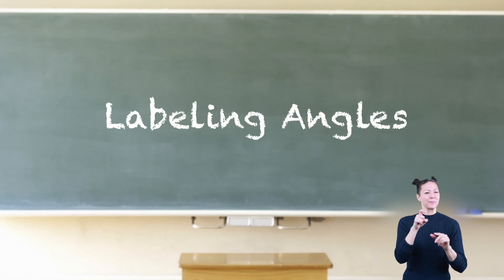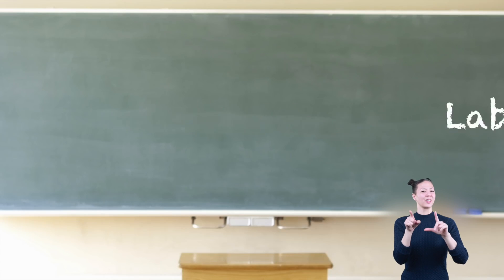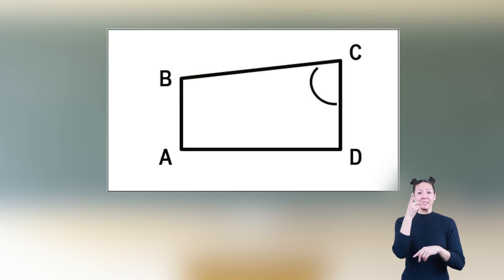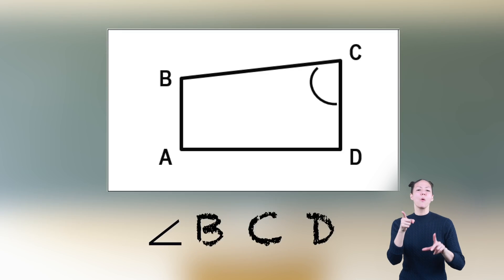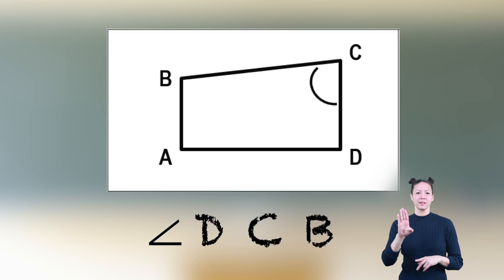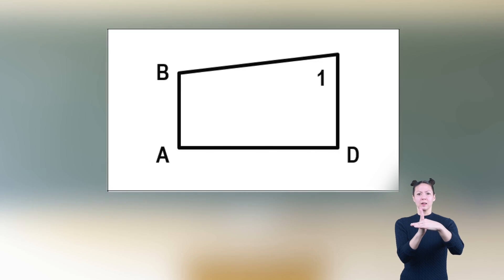Angles need to be labeled like lines or line segments. There are a couple of methods used. Here are examples of how angles are labeled. This angle is angle BCD or angle DCB. Note: the vertex is in the middle. The same angle can also be called angle 1. Both labels are correct.